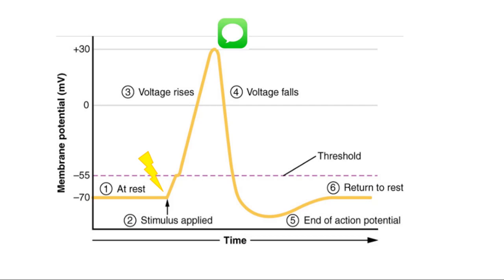Here's the action potential graph. We're going to talk through this again like we did in unit one. At time one we are at rest — at resting membrane potential, the neuron is at negative 70 waiting to hear something. When it hears something, we see a stimulus applied. A stimulus is just something that changes. When we talk about the stimulus applied at this point on the graph, we're talking about neurotransmitters — chemicals that one neuron uses to talk to another.